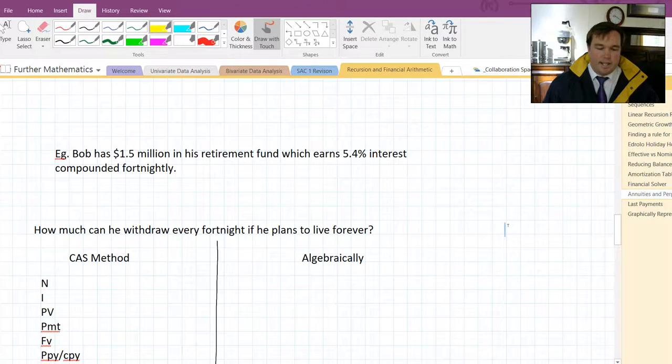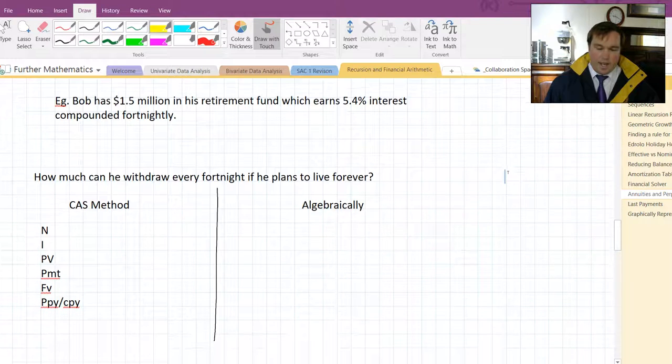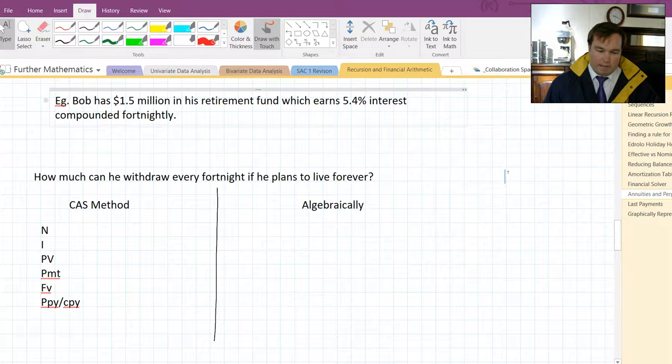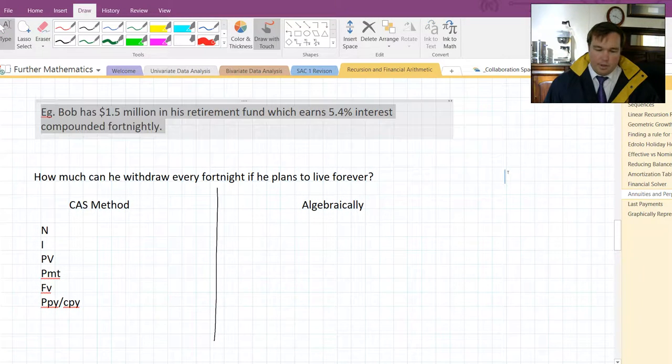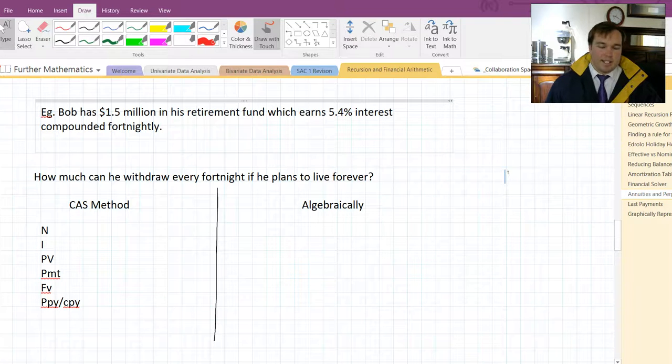Alright, so let's take an example. Bob has $1.5 million in his retirement fund, which earns 5.4% interest compounded fortnightly. How much can he withdraw every fortnight if he plans to live forever? Or by live forever I mean, let's say he wants to keep $1.5 million to hand over to his children when he dies.